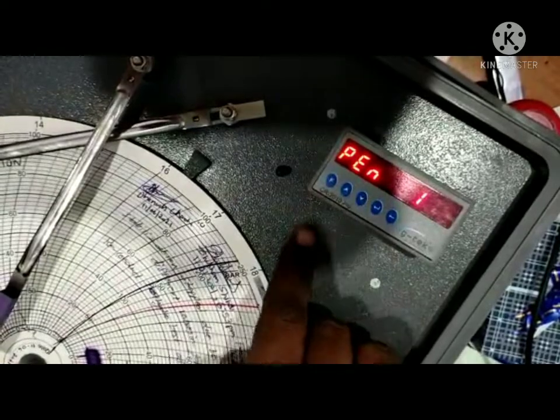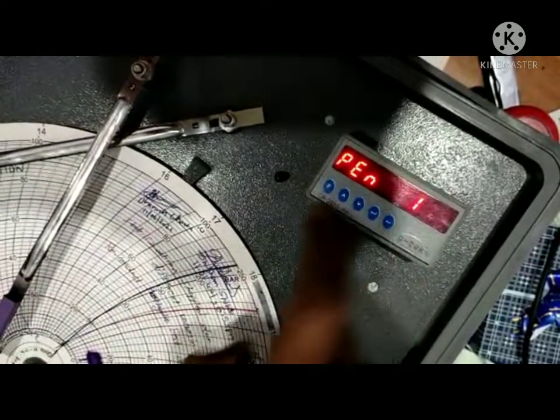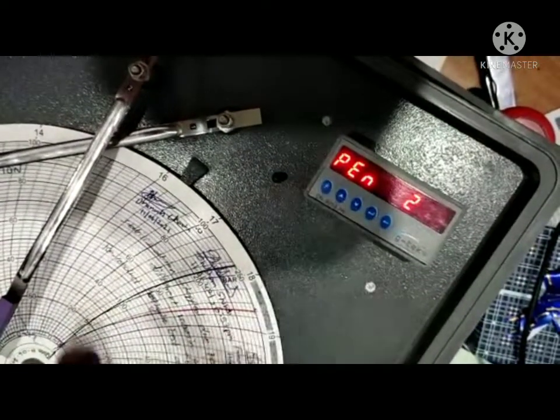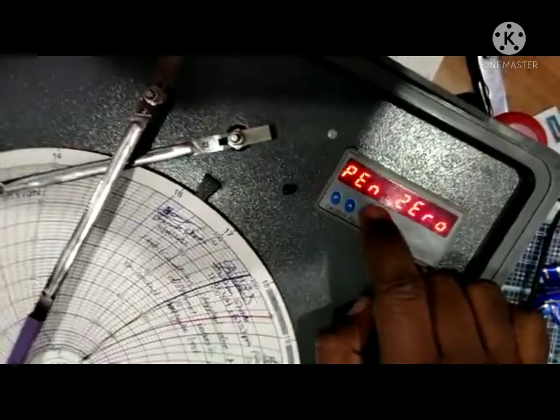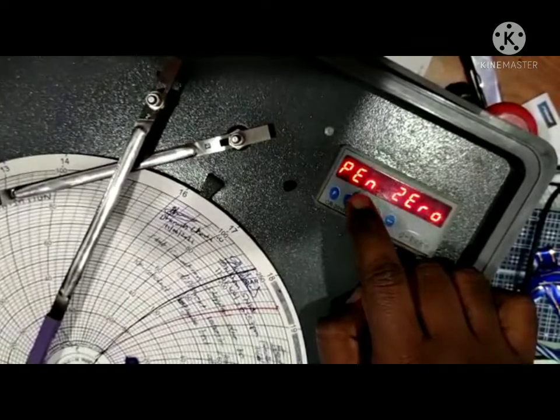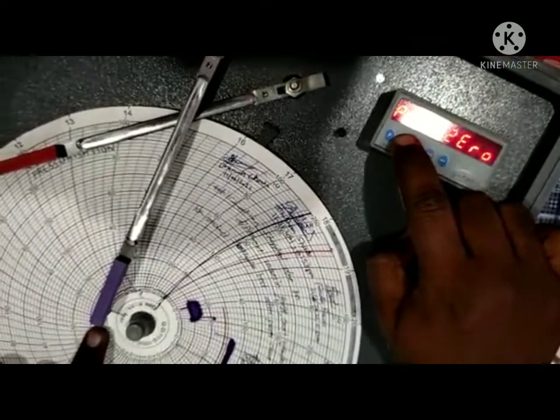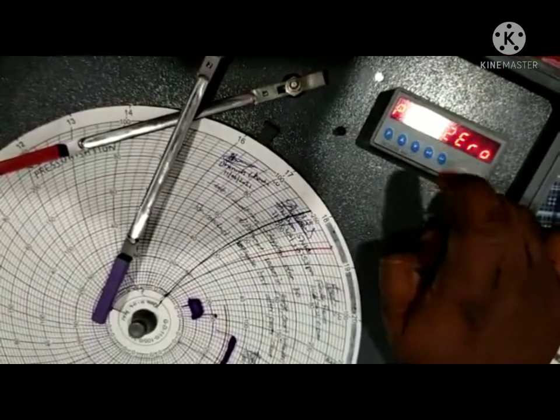Press Enter and select the required pen. Press Enter to start the calibration. Now the pen will move to the zero position. You can check the pen tip is aligned with the zero and you can make adjustments using the up and down keys.